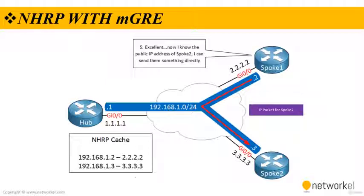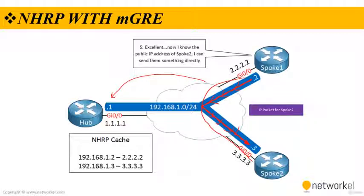We only require the hub to figure out the public IP address, and after that all traffic can be sent directly from spoke to spoke. From now on, if spoke 1 wants to send packets to spoke 2, the traffic will no longer go through the hub — it will go directly from spoke 1 to spoke 2.